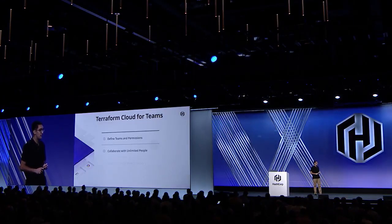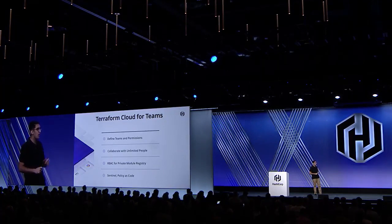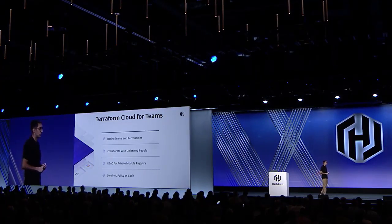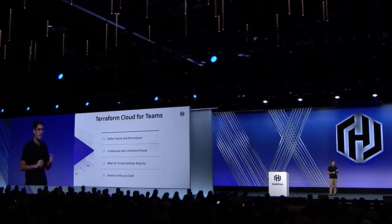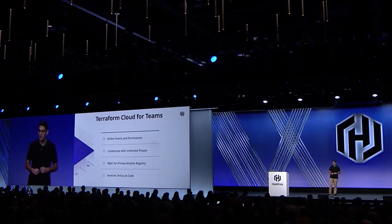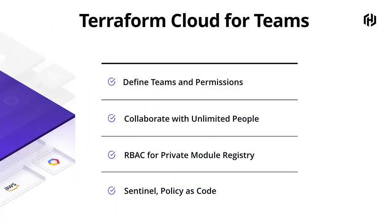I'm excited to talk about Terraform Cloud for Teams. It adds on top of the free tier and looks at a slightly different set of challenges: how do we define teams and provide different sets of permissions in terms of who is allowed to make what types of changes in a fine-grained way? It allows collaboration with an unlimited number of people. It also brings role-based access control to the module registry, so some people can publish modules while others can only consume. And it exposes Sentinel, our policy-as-code engine.